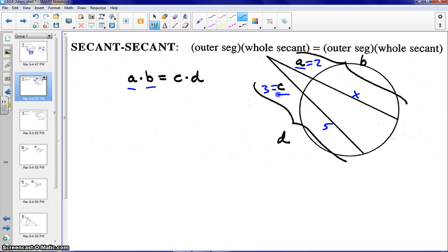So again, we want to do the outer times the whole. So in our first case here, it would be 2 times the entire secant, so that would be 2 plus X, equals the outer part of the second secant, 3, times the whole secant, which in our case here would be adding the 3 and the 5.